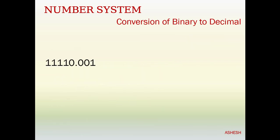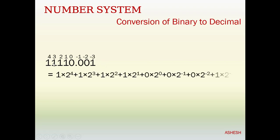Now if we have both an integer and a fraction in the same number, it works the same way. For the integer part, write positions right to left: 0, 1, 2, 3, 4. For the fraction part, write left to right: minus 1, minus 2, minus 3. The expression is: 1 into 2 to the power 4, plus 1 into 2 to the power 3, plus 1 into 2 to the power 2, plus 1 into 2 to the power 1, plus 0 into 2 to the power 0. Remember: do not write the decimal point in the expression — just write plus. Then continue: 0 into 2 to the power minus 1, plus 0 into 2 to the power minus 2, plus 1 into 2 to the power minus 3.